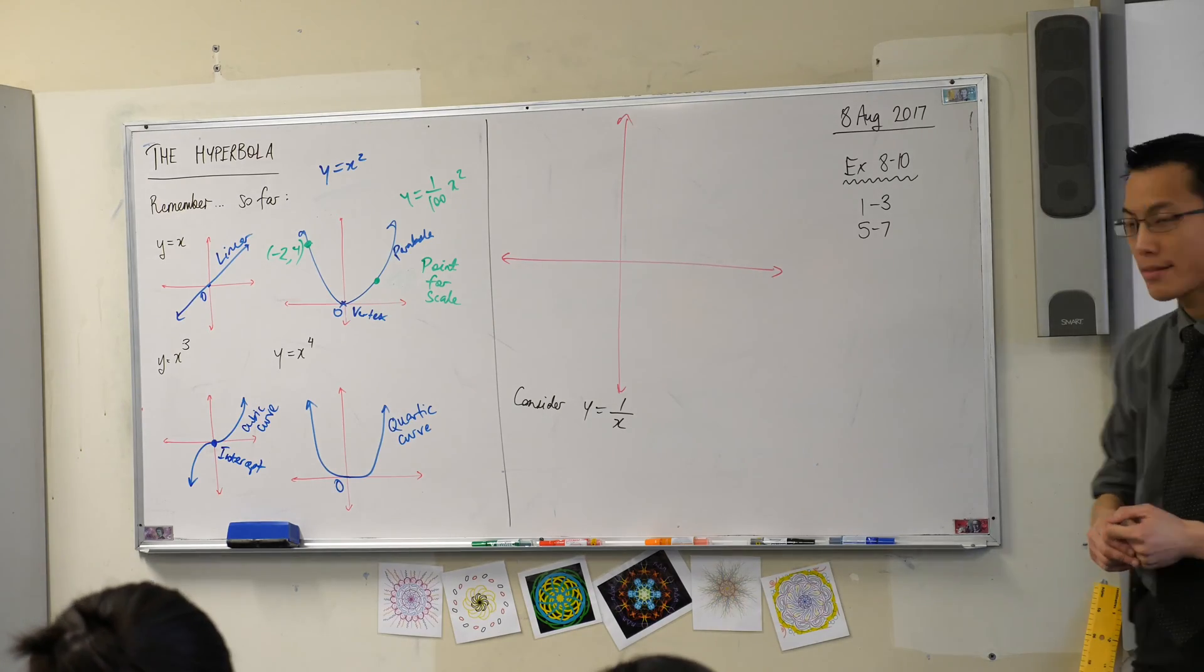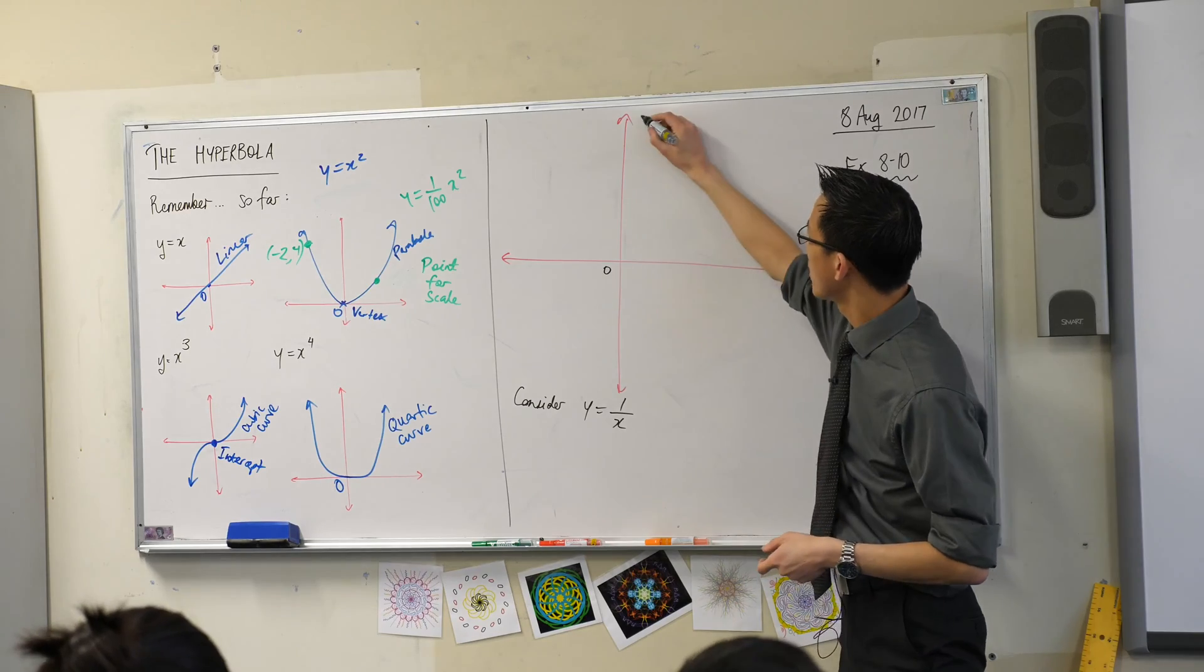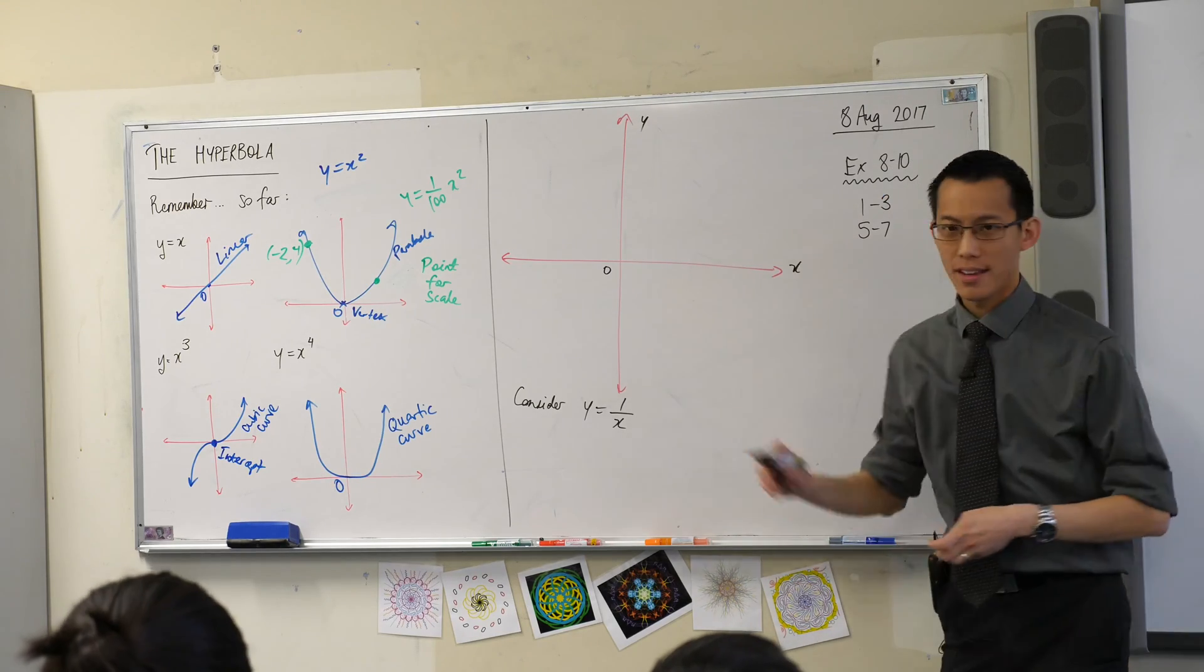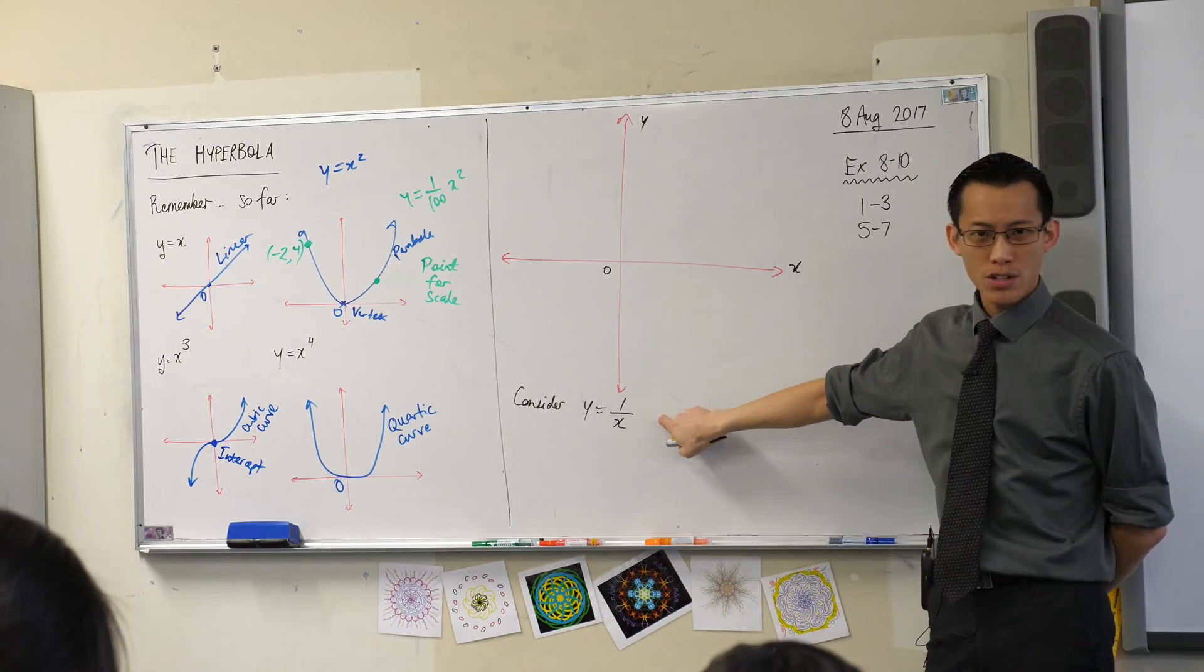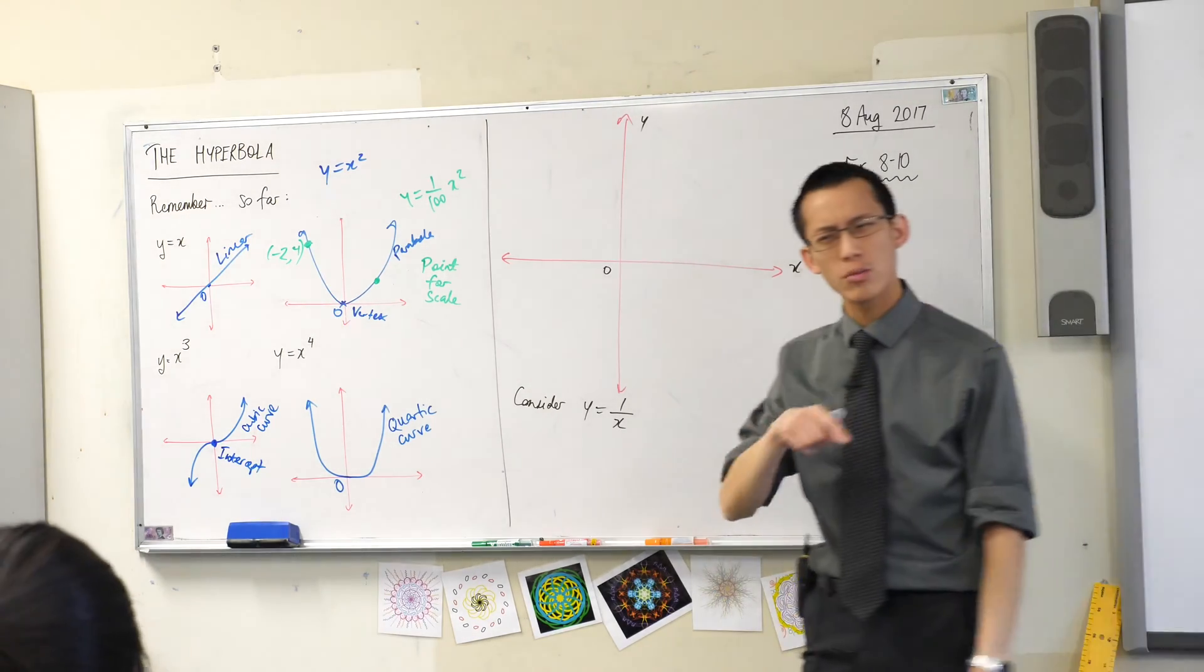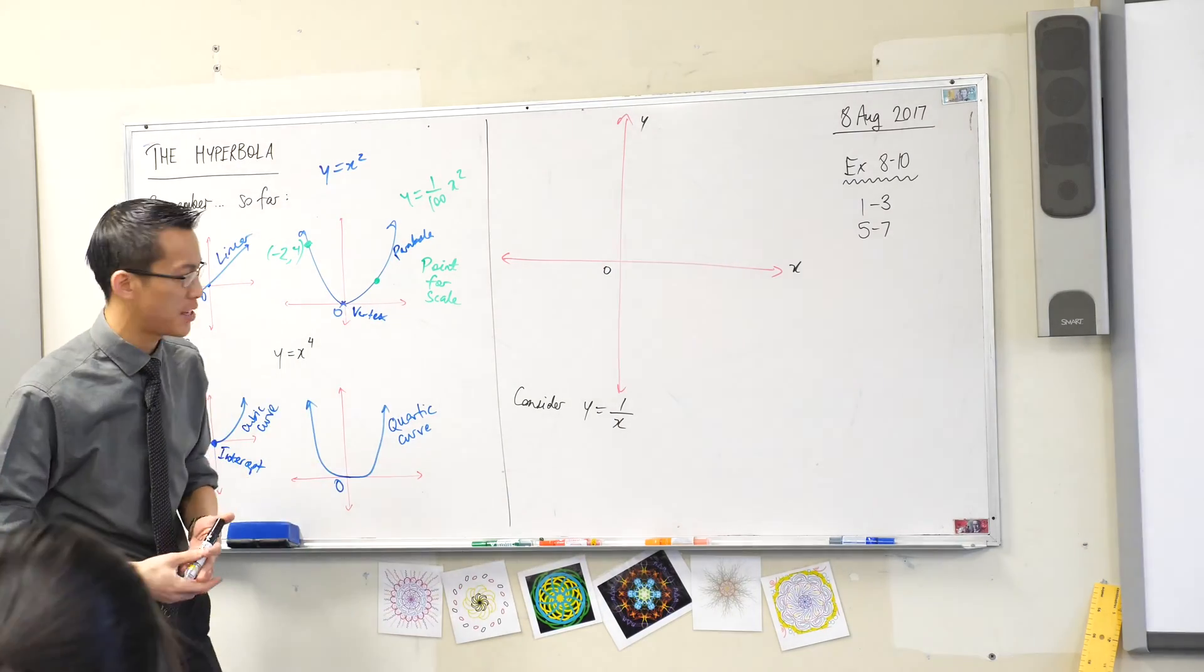Now as you draw your big set of axes there, we should put some important labels on it. Underneath your new big set of axes, I want you to think about this guy with me. This is an equation we've seen before, right at the beginning of this topic before we looked at graphs.